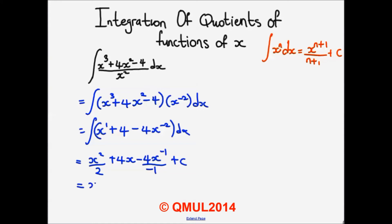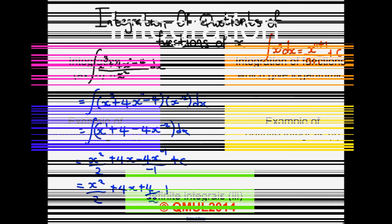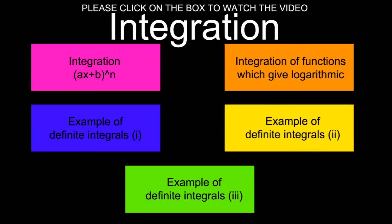Simplifying, we get x squared over 2 plus 4x plus 4 over x, plus c.